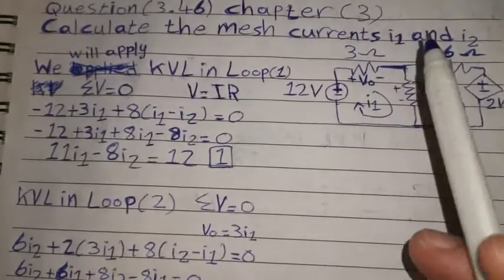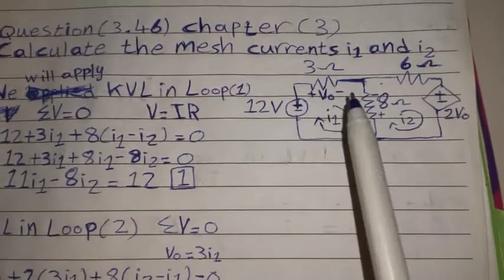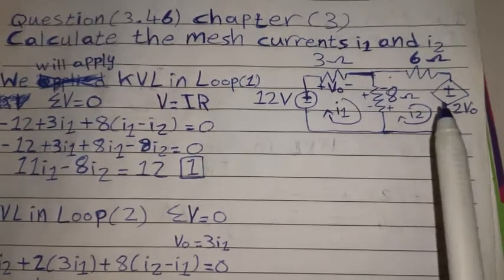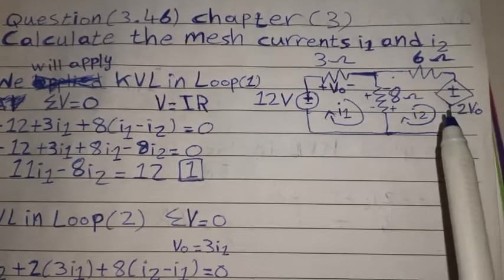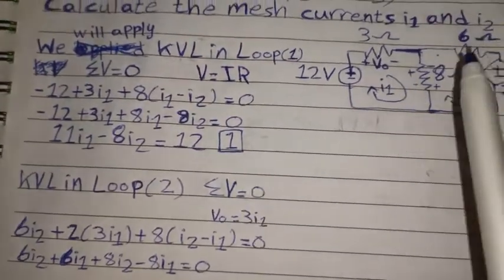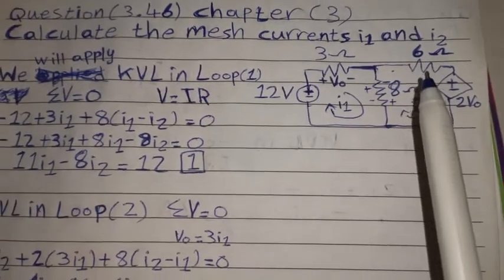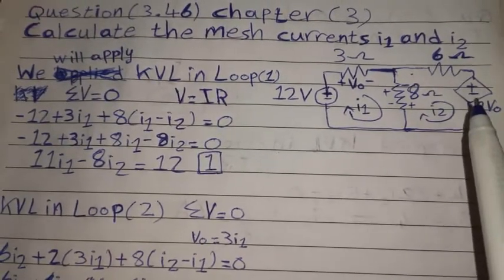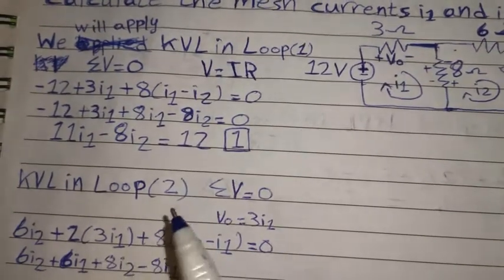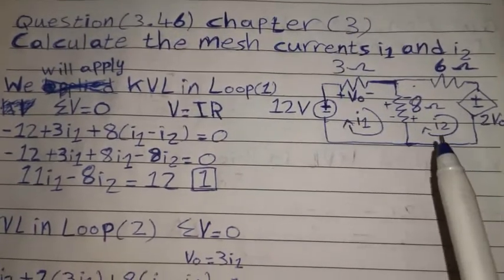Then we will apply KVL in loop 2. Sigma V equals zero. The V-node will equal 3I1 for this dependent source. We will say 6I2 because the current — assuming I2 clockwise — will go through, giving 6I2. Plus 2 multiplied with 3I1, since V-node equals 3I1.